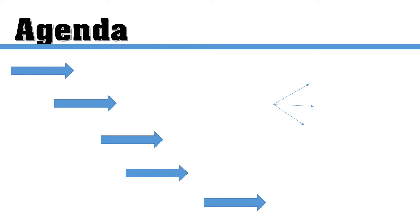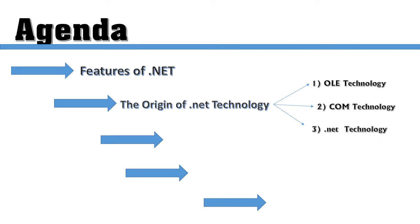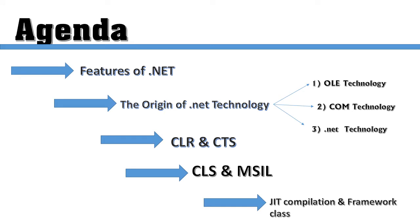The agenda of today's session: first we learn features of .NET Framework. Then we discuss about the origin of .NET technology and its three different origins — OLE technology, COM technology, and .NET technology. Then we discuss about the CLR and CTS. After that we learn the specifications of CLS and MSIL, and lastly the just-in-time compilation and some framework built-in class libraries.